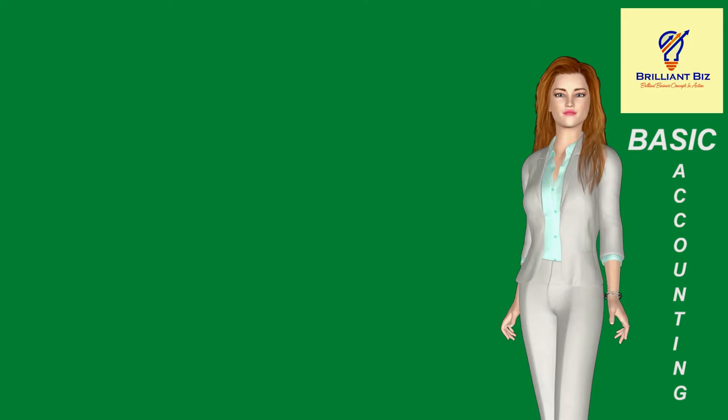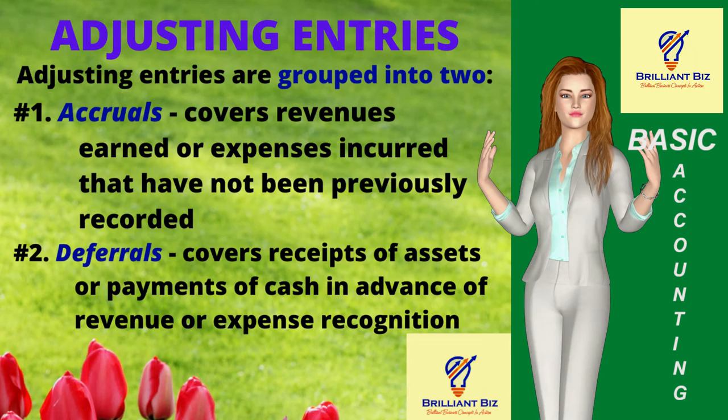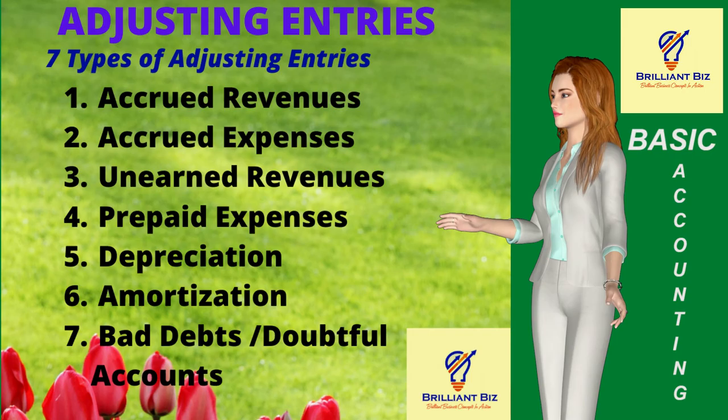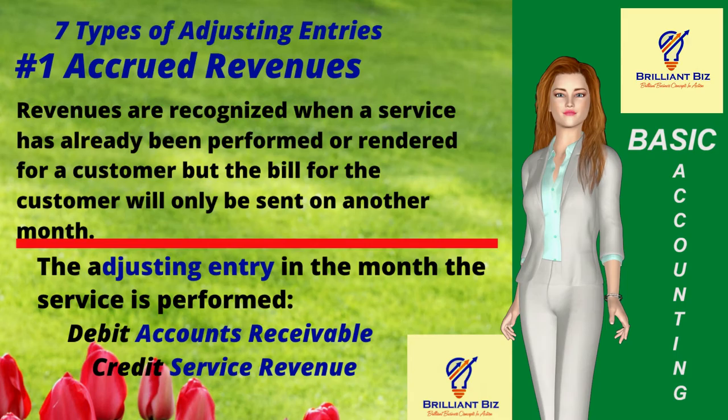Adjusting entries are grouped into two: number one, accruals; number two, deferrals. Accruals cover revenues earned or expenses incurred that have not been previously recorded, while deferrals cover receipts of assets or payments of cash in advance of revenue or expense recognition. The seven types of adjusting entries are: accrued revenues, accrued expenses, unearned revenues, prepaid expenses, depreciation, amortization, and bad debts or doubtful accounts.